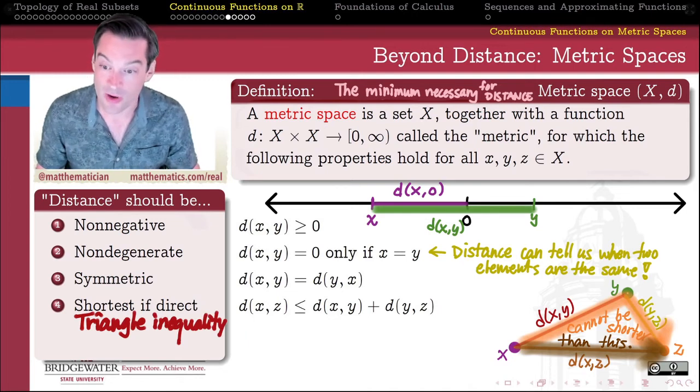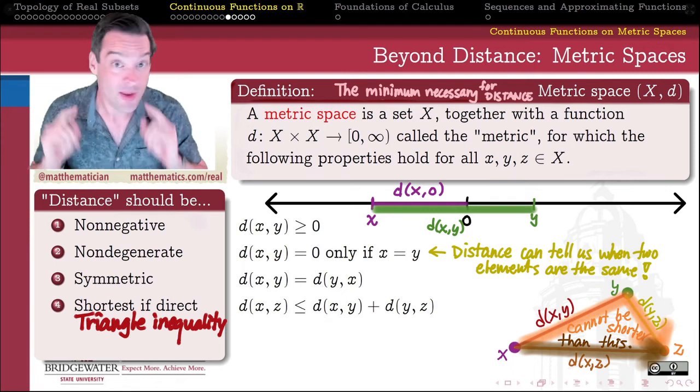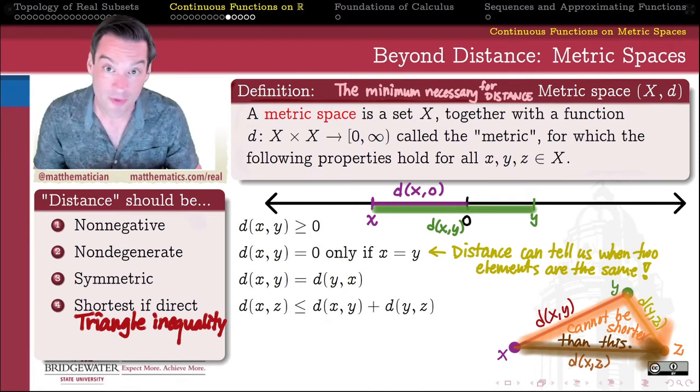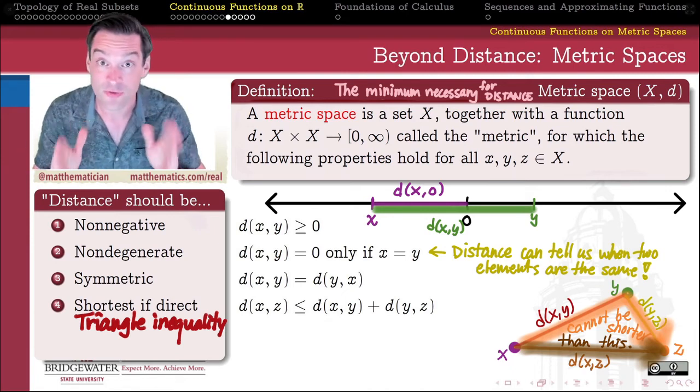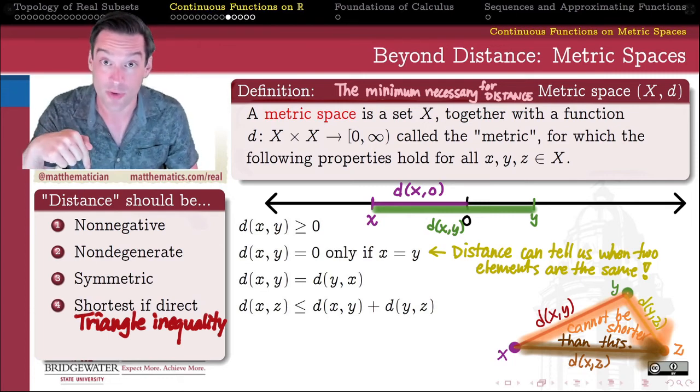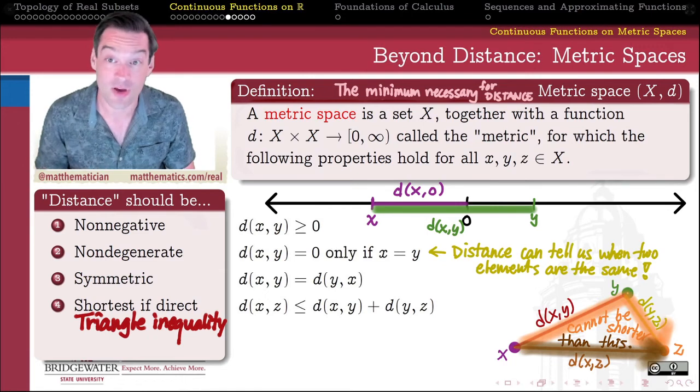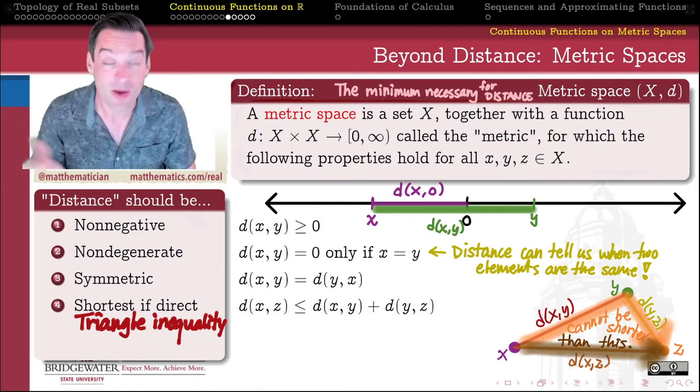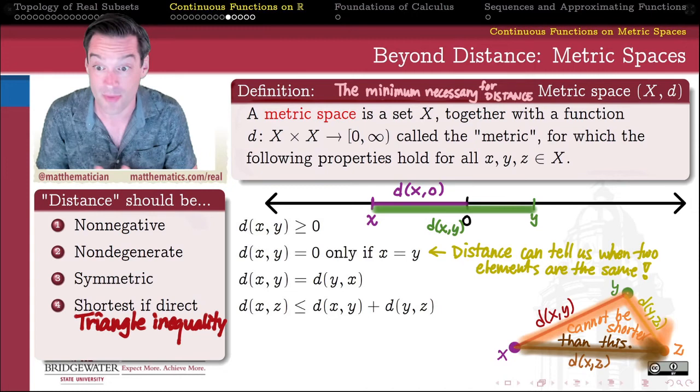Now we've already seen an example of a triangle inequality for absolute values that we're going to return to in the next video when we verify that the ordinary absolute value of the difference between two real numbers actually does satisfy all four of these properties. And so we really have been talking about a metric all this time when we've been using absolute values of differences of real numbers all semester.